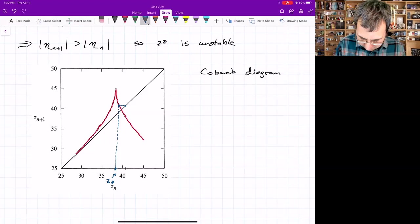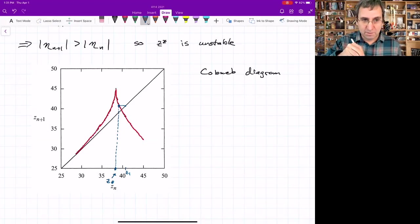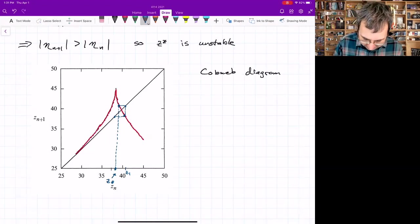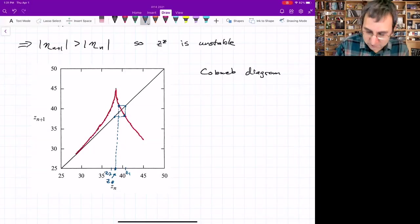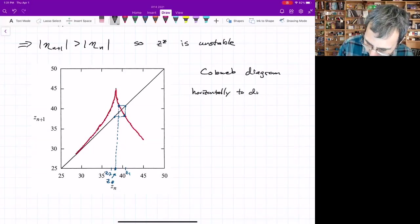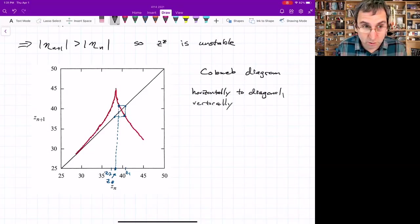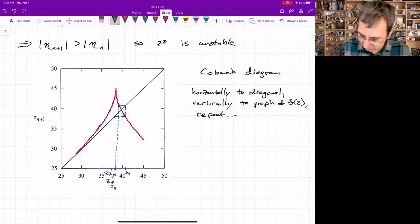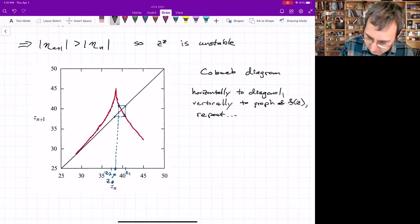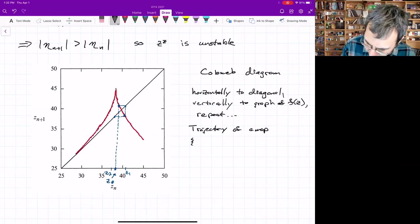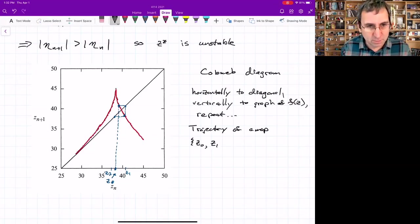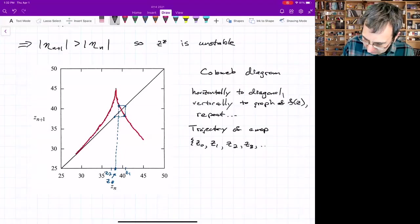But the quick way to do that is you just go horizontally to the diagonal. And so that gives me what my Z_1 is. And then I go vertically to the graph of F(Z). So in this case, I go down. So that will tell me, going horizontally, what the next point is. So now this is Z_2. It takes some getting used to. So what am I doing? Going horizontally to the diagonal and then vertically, maybe up or down to the graph of F(Z). And then I repeat. And what I'm getting is a trajectory of a map can be obtained this way.